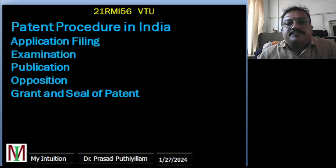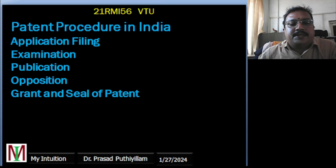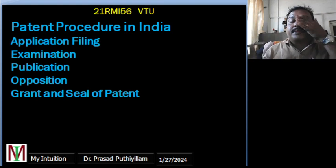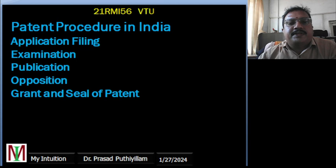First one, that is application filing. In India, the patent procedure begins with the filing of a patent application. The application needs to be submitted as a detailed specification — patent specification — including the drawing if possible, the proper drawing of that invention along with the application form need to be given. That is application filing. Then comes examination; after filing, the application undergoes a thorough examination by the Indian patent office.